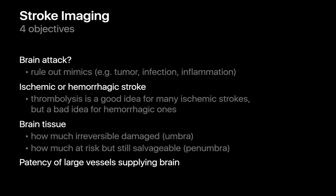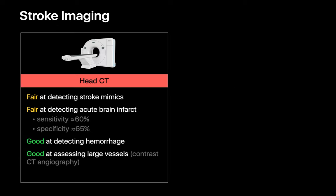There are two imaging modalities at our disposal for answering these questions. Non-contrast head CT studies are readily accessible imaging exams that can be done very quickly. They can best be described as fair at distinguishing strokes from disorders that can mimic a stroke, and fair at detecting acute brain infarcts. Non-contrast head CTs are pretty good at detecting hemorrhage, and if we're able to introduce contrast, CT angiograms are pretty good at assessing the patency of the large vessels supplying the brain.